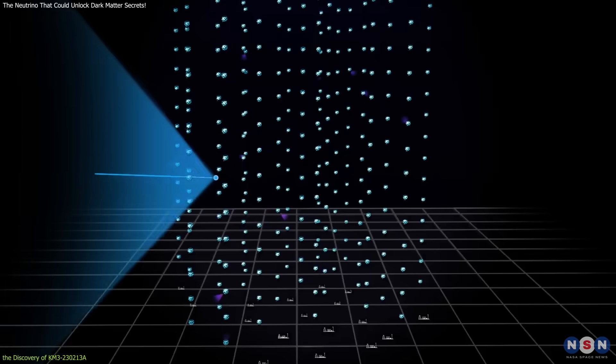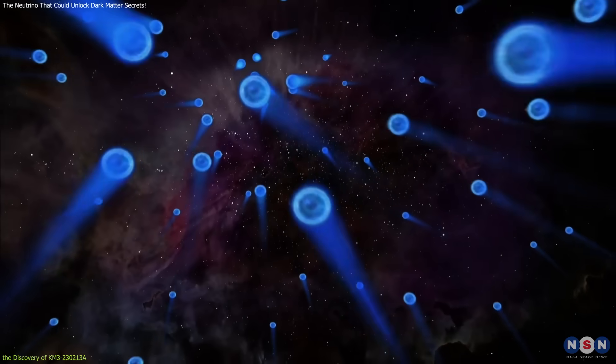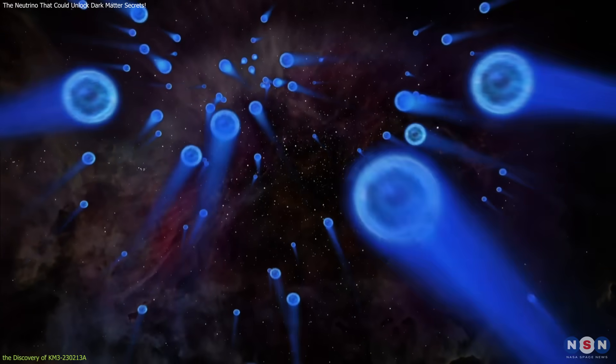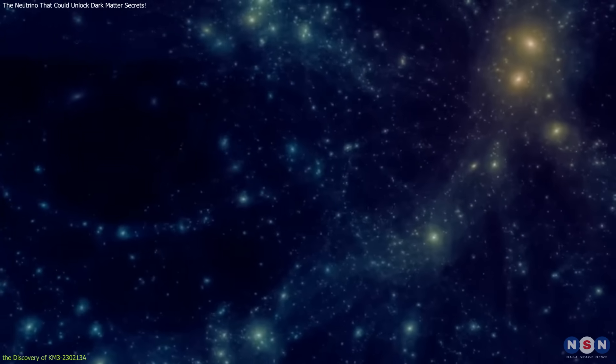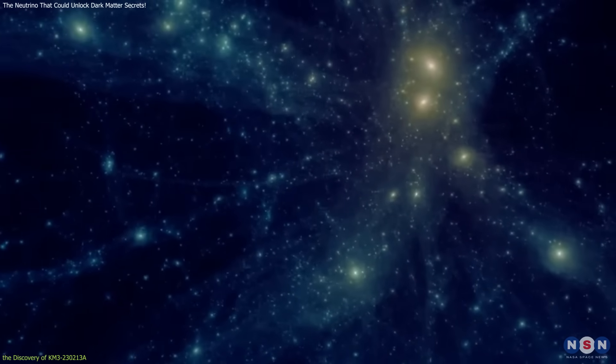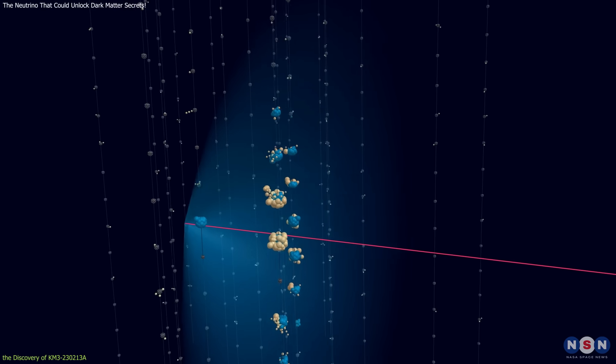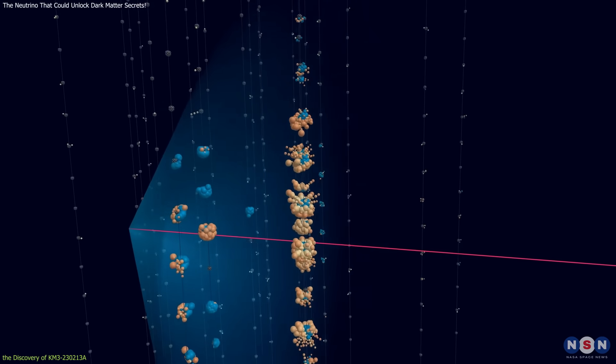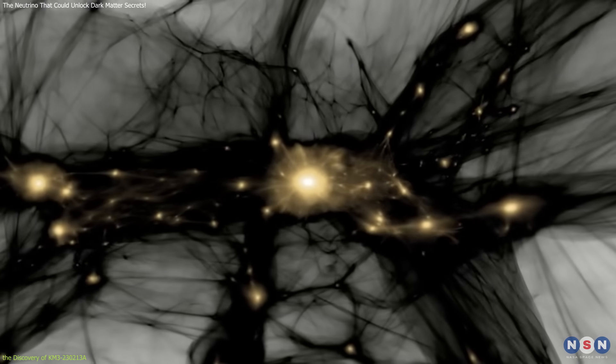The energy and path of KM3-230213A have sparked interest in the potential connection between high-energy neutrinos and dark matter, an invisible substance that makes up about 27% of the universe. While this discovery is still being analyzed, it opens up the possibility that neutrinos like KM3-230213A might be a new way to study dark matter indirectly.